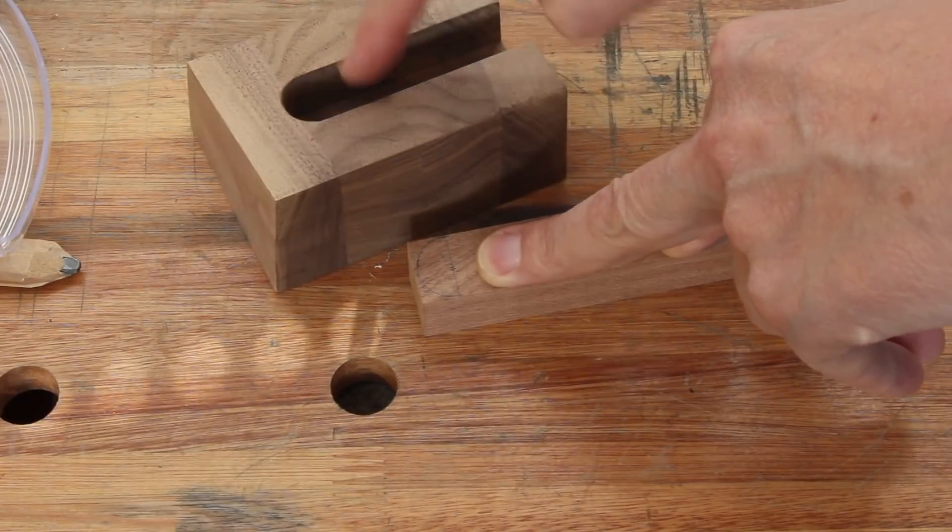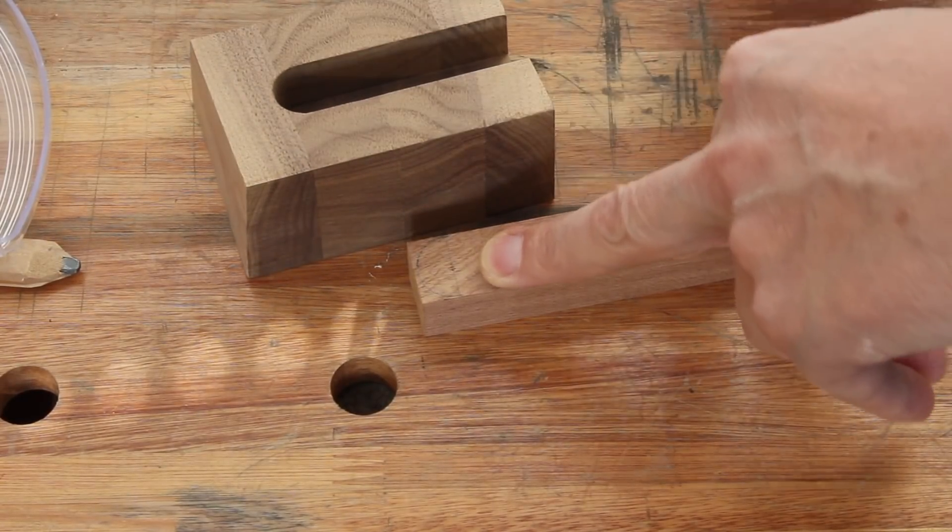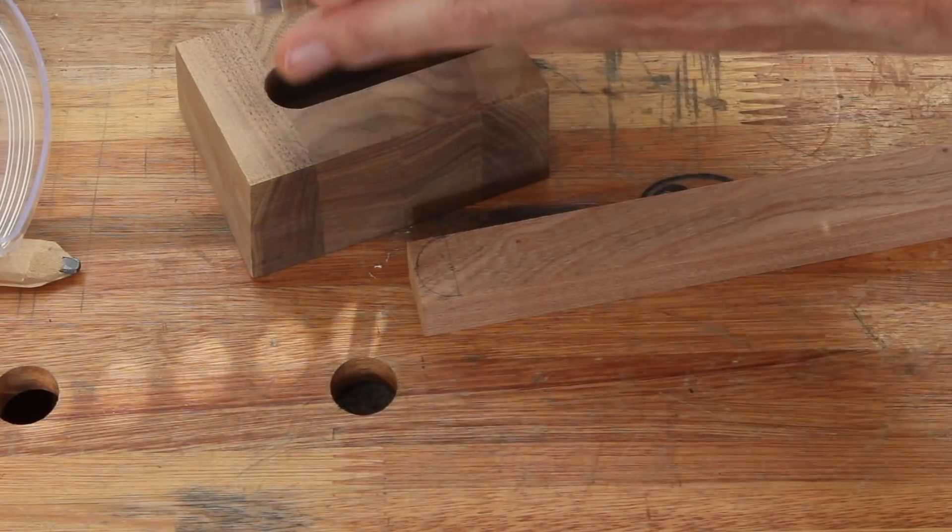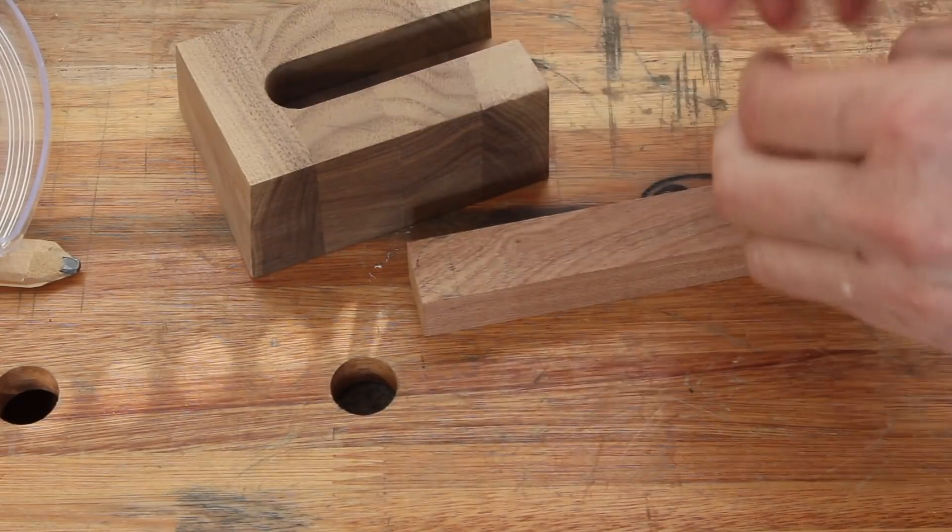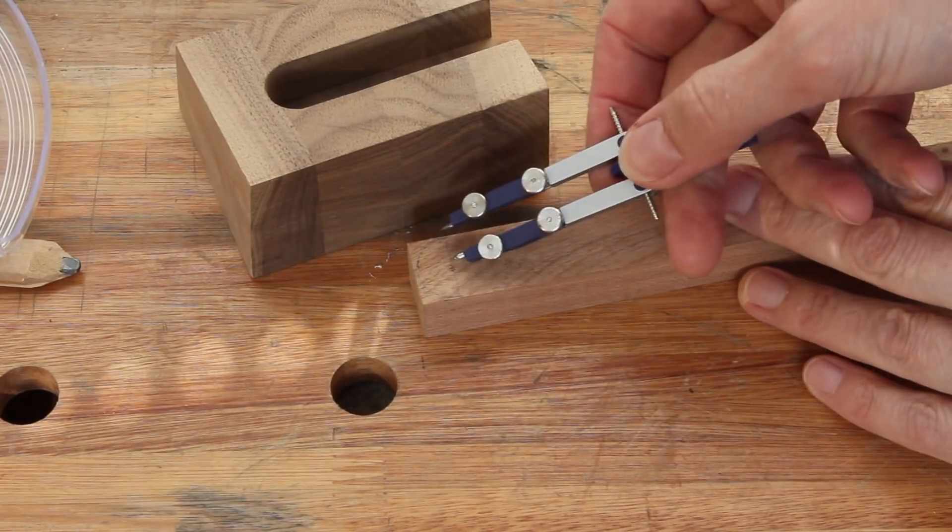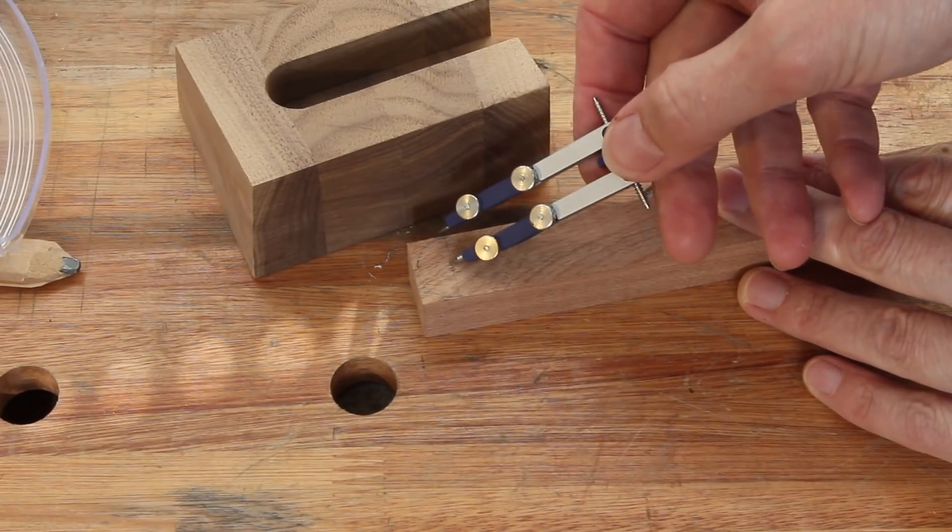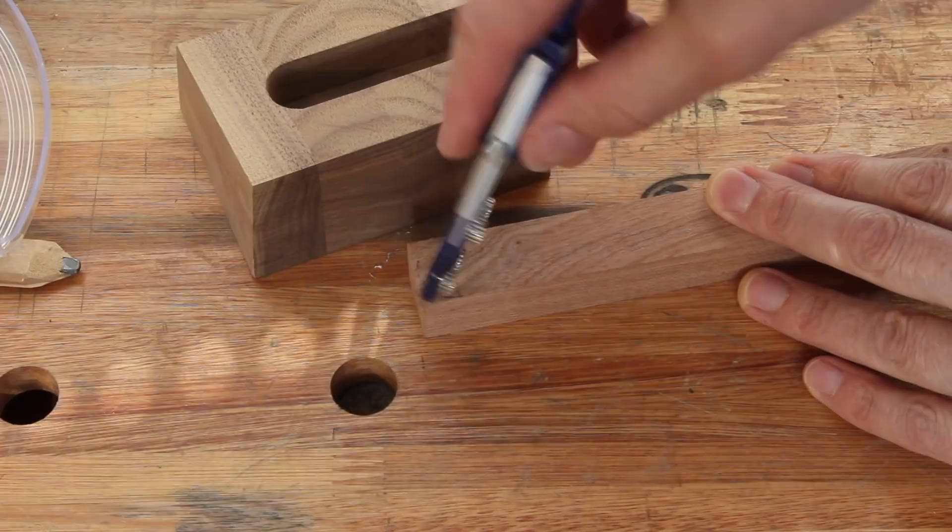The mortise was created with a 19mm router bit and then the mortise was just widened a little bit so there's a flat spot up here, hence this isn't a continuous arc, it's two separate 19mm arcs.